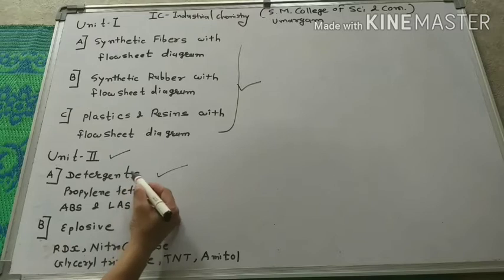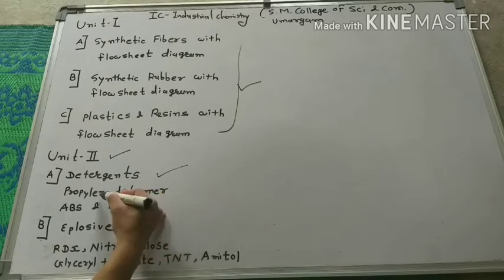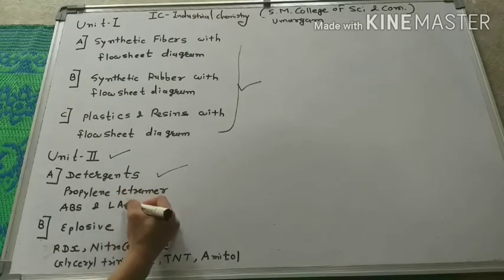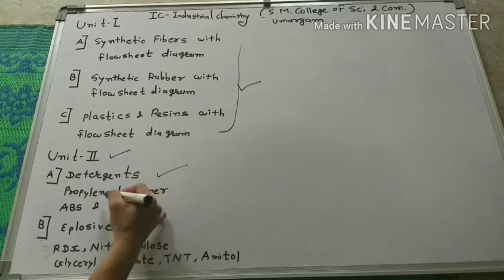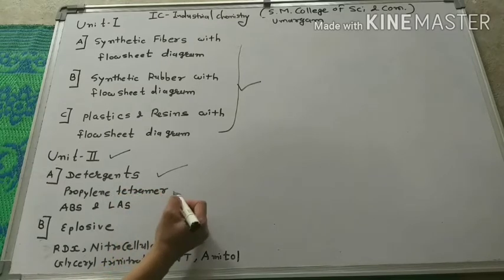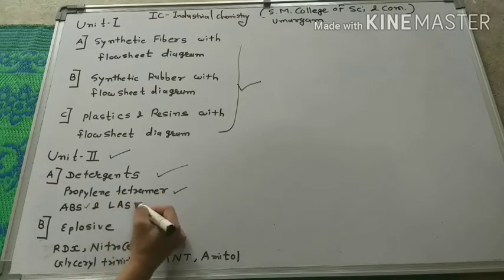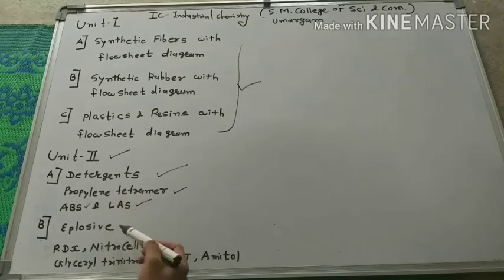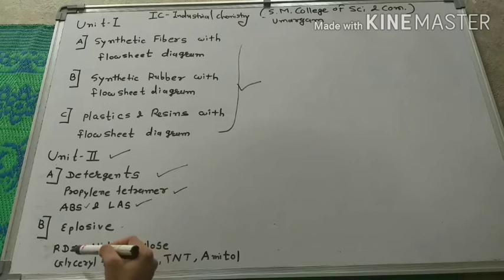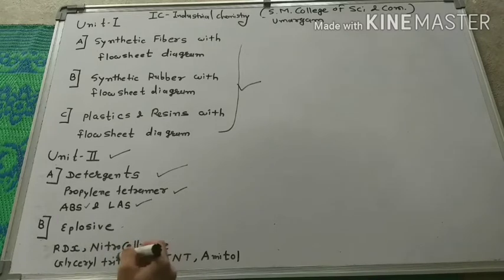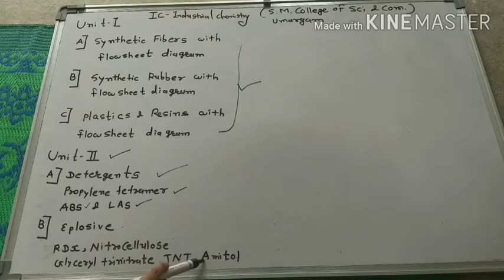In this chapter we will be talking about 3 points: propylene tetramer, ABS and LAS. The second chapter is explosives. In this chapter we will discuss RDX, nitrocellulose, glycerin trinitrate, TNT and ANFO.